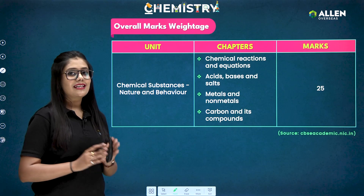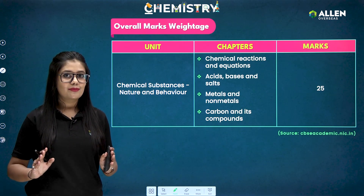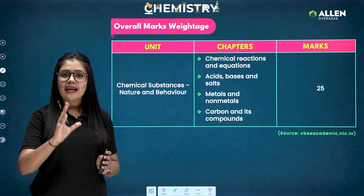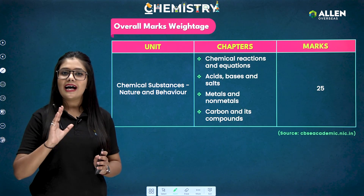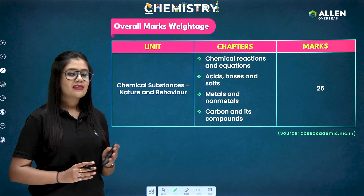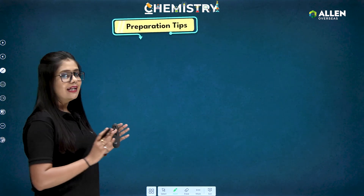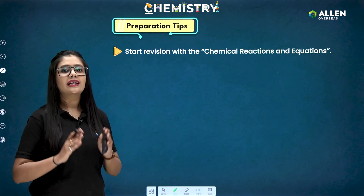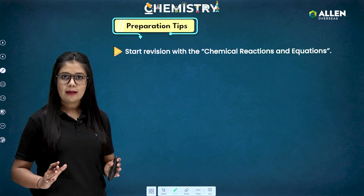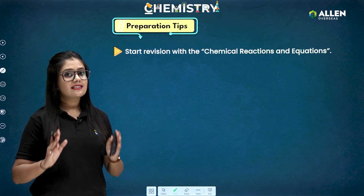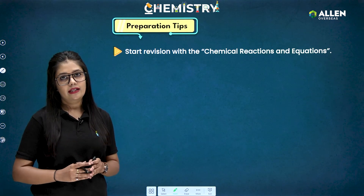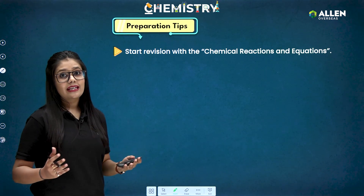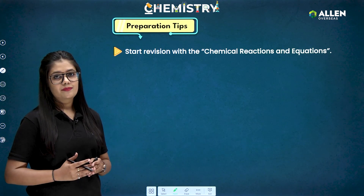Chemistry is a very high scoring subject if your strategies are in the right direction. The very first preparation tip is to start your revision with chemical reactions and equations, as this is the base for every other chapter in chemistry. It will ease out your revision process.